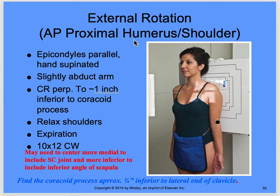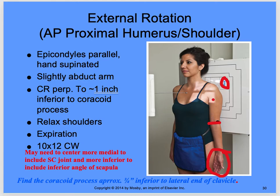For the external rotation AP proximal humerus and shoulder, your epicondyles will be parallel with the image receptor. The hand is turned out, epicondyles are parallel, hand supinated. Slightly abduct the arm just a little bit — it's not as important in the proximal humerus as having the abduction, but a little bit is going to be okay.